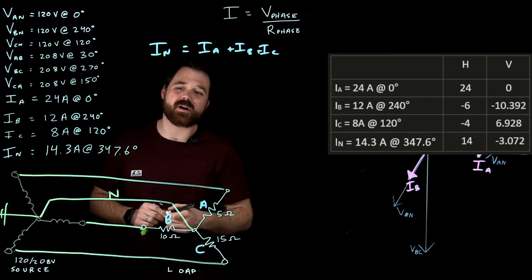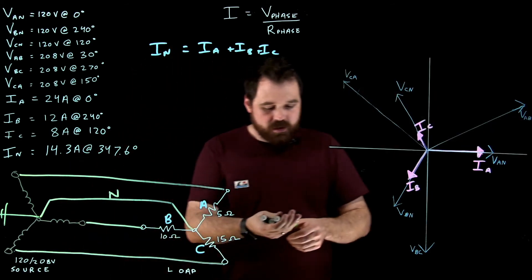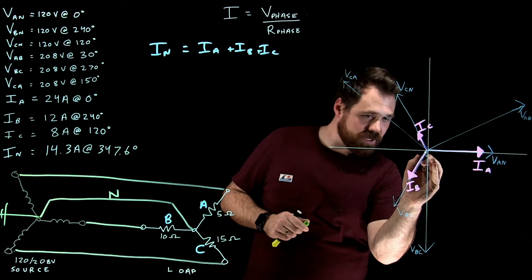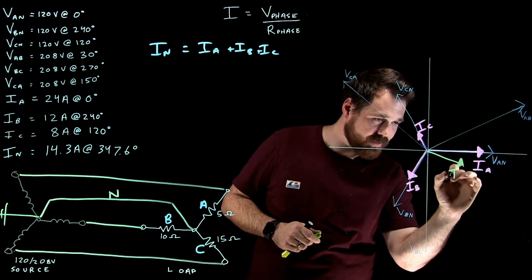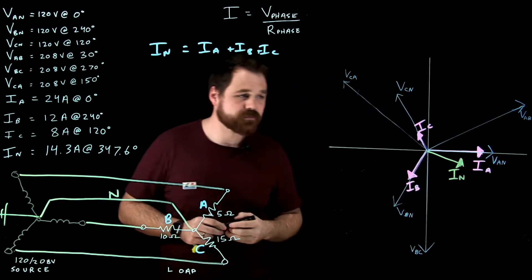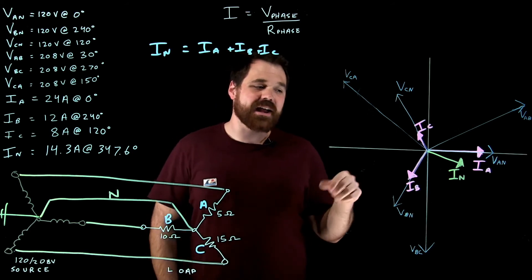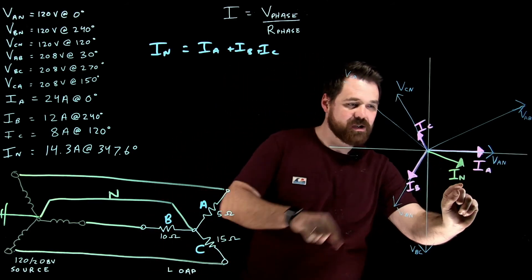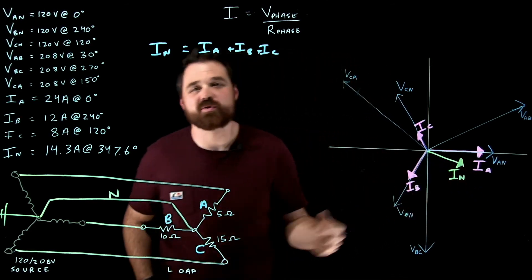So let's put that onto our phasor diagram and take a look. So come over here, my neutral current, we said was going to be 14 amps, right about there. I neutral. So now that's just the same as taking these three phasors and adding them up, going IA plus IB, moving that over here, plus IC, moving that down here, takes me back up to where that neutral current is.